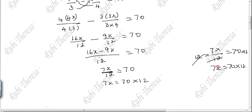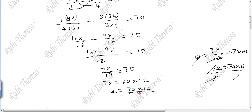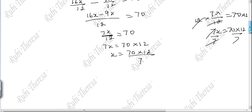Now you want to get x, so divide by 7. 7 gets cancelled. x equals 70 into 12 divided by 7. 10 sevens are 70, so 70 divided by 7 is 10. Therefore x equals 10 into 12, which equals 120.